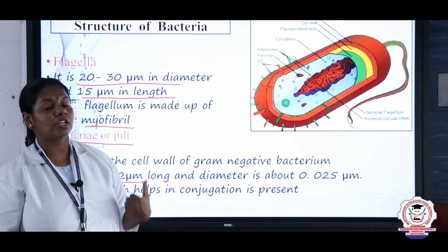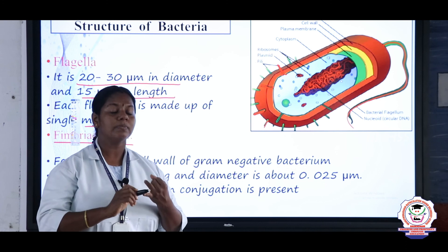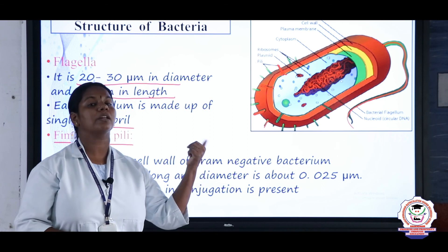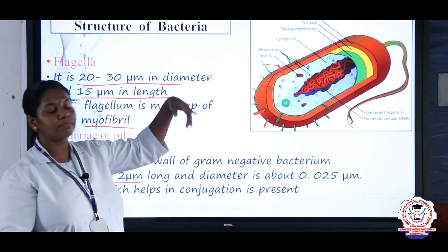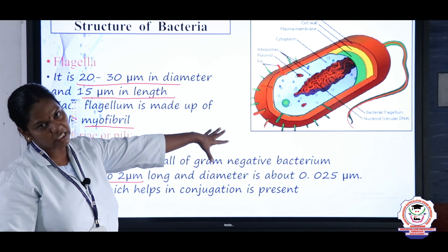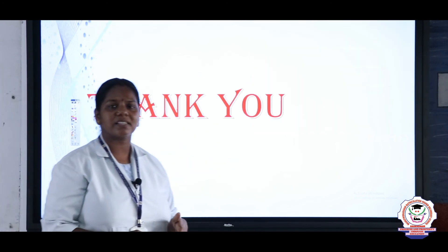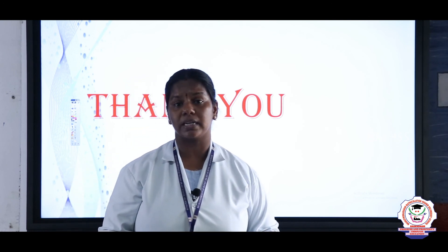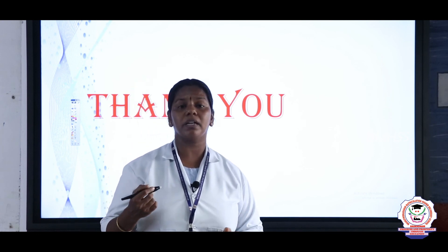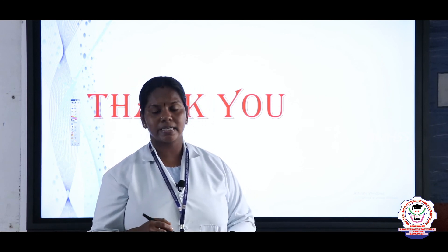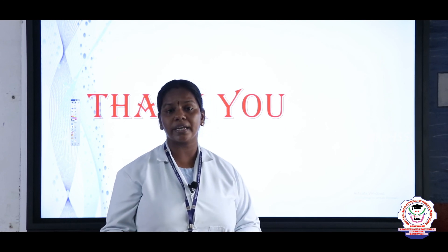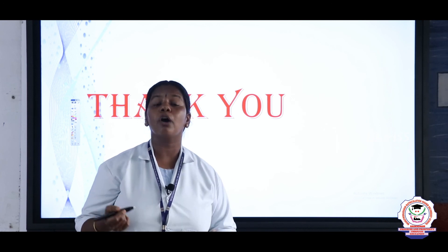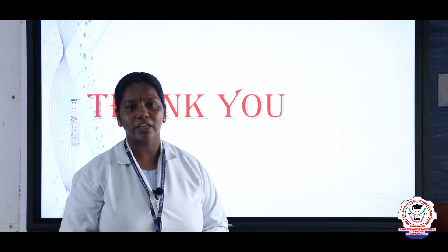In this session we have discussed the structure of bacteria: capsule, cell wall, plasma membrane, cytoplasm, mesosomes, bacterial chromosome, plasmid, flagellum, and fimbriae. Drawing and labeling the bacterial cell is a very important question — practice the diagram. Study material and assessments for this topic are attached. Thank you children, have a nice day.